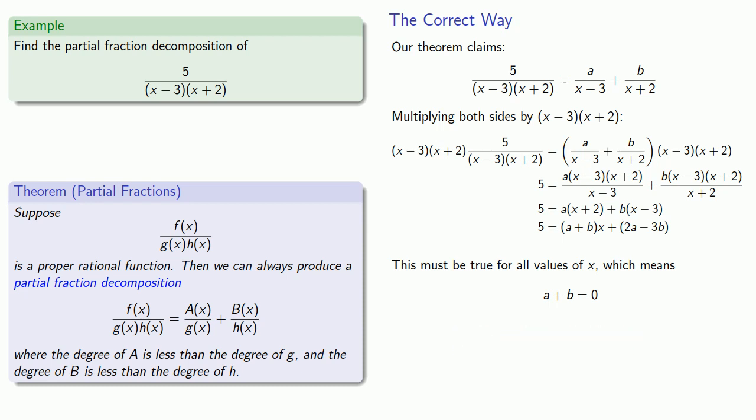Similarly on the right I have my constant term 2a - 3b. This must be equal to the constant term on the left, 5.